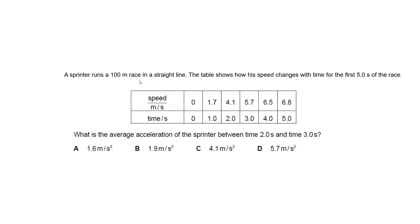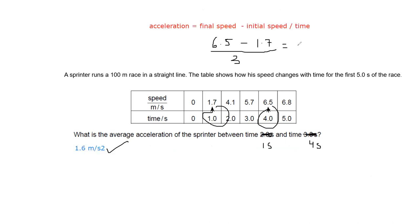Checking whether this object has constant acceleration by labeling positions A, B, C, D, and E: the answer 1.6 m/s² is correct because 4.8 divided by 3 gives 1.6 m/s².